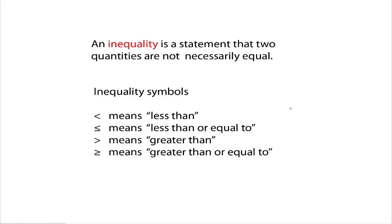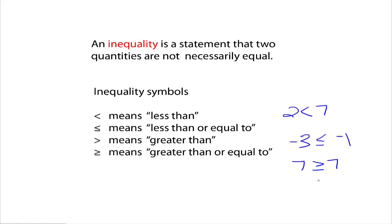We can use these for something like 2 is less than 7. That's a true statement. You can think of the pointy part pointing towards the smaller number, or the open part towards the bigger number. We also could have negative 3 is less than or equal to negative 1 — that's true. Or 7 is greater than or equal to 7 — that's true, because 7 is not greater than 7 but 7 is equal to 7, so the statement holds.